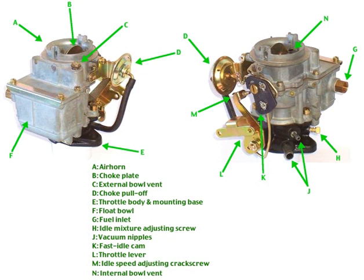A carburetor basically consists of an open pipe through which the air passes into the inlet manifold of the engine. The pipe is in the form of a venturi — it narrows in section and then widens again, causing the airflow to increase in speed in the narrowest part. Below the venturi is a butterfly valve called the throttle valve, a rotating disc that can be turned end-on to the airflow to barely restrict flow, or rotated to completely block the flow of air. This valve controls the quantity of air-fuel mixture delivered, thereby regulating engine power and speed. The throttle is connected through a cable or mechanical linkage to the accelerator pedal on a car or throttle lever in an aircraft. Fuel is introduced into the airstream through small holes at the narrowest part of the venturi, with fuel flow adjusted by precisely calibrated orifices referred to as jets.